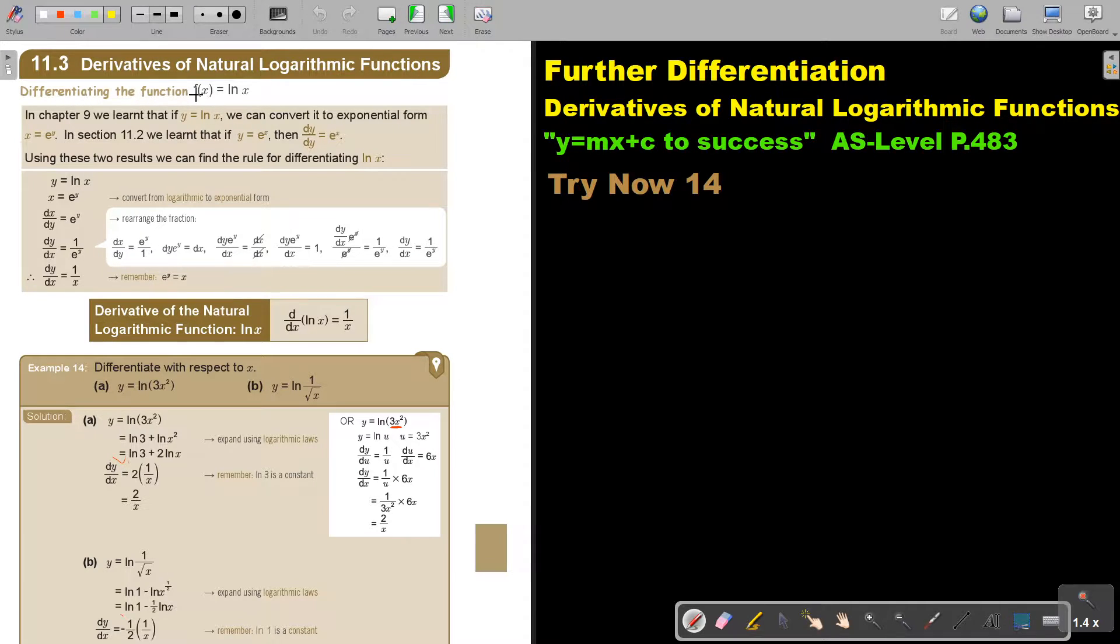Differentiate the function f(x) equals ln x. Now to understand this rule, let's go through this. In chapter 9, we learned that y equals ln x, we can convert it to exponential form. So can you still remember, there's the e, let's take another color.